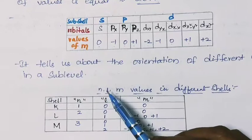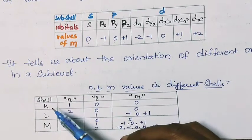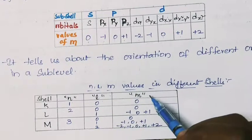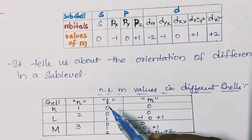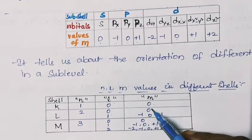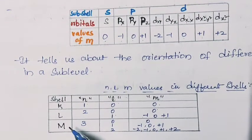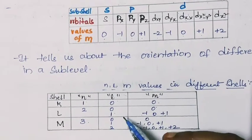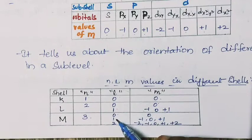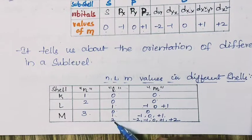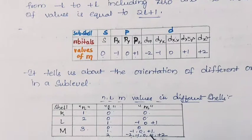Now we will see the n, l, and m values in different shells. For the first shell K (n = 1): l = 0, m = 0. For the second shell L (n = 2): l = 0 and 1; m = 0, and −1, 0, +1. For the third shell M (n = 3): l = 0, 1, 2; m values are 0 (for l = 0), −1, 0, +1 (for l = 1), and −2, −1, 0, +1, +2 (for l = 2).